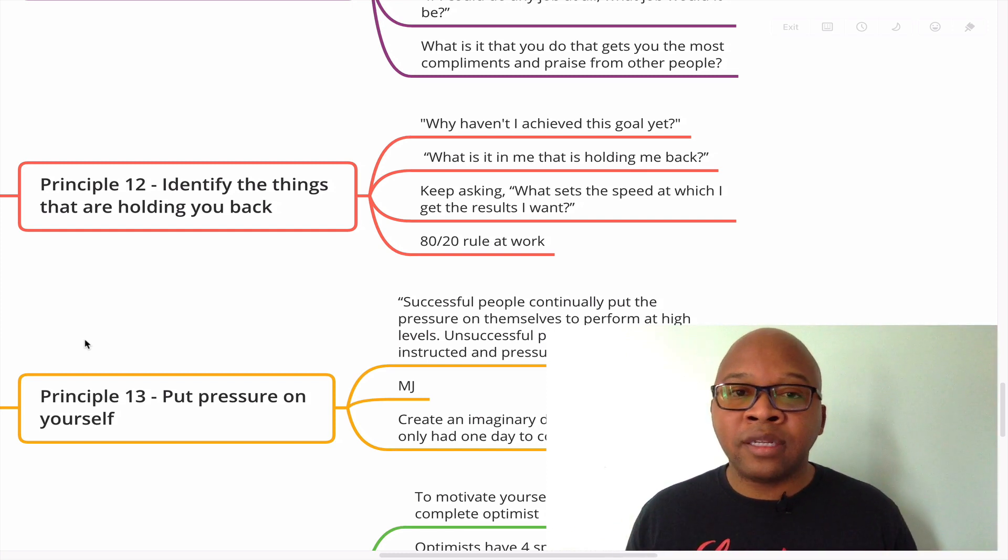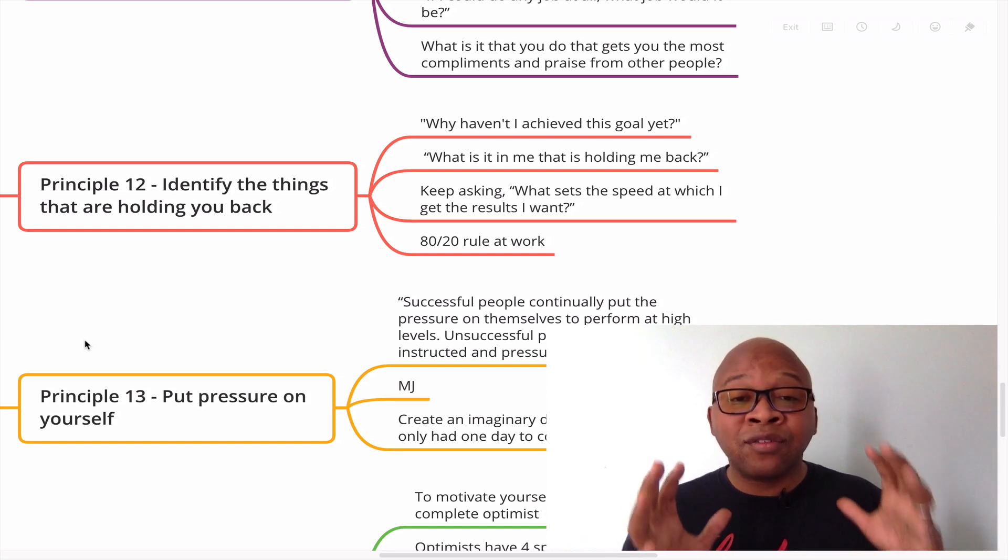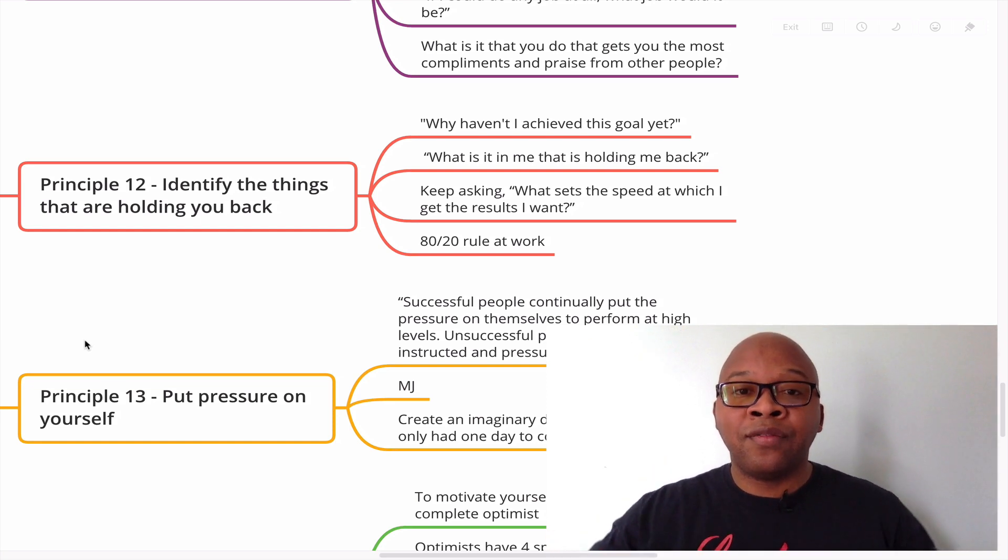See, the 80-20 is at work here. 80% of your constraints are internal. And 20% are external. So what is it in me that is holding me back? And here's another question. What sets the speed at which I get the results I want? So think about what sets the speed at which you get the results that you want. And then you focus on that. So again, the key is to get rid of the constraints as quickly as possible. So if you can do this first thing in the morning, and you think about what is my main constraint today? What is that one thing I need to get out of the way? What is that one constraint? And then you get rid of it, then you'll be able to accelerate at a much greater pace.